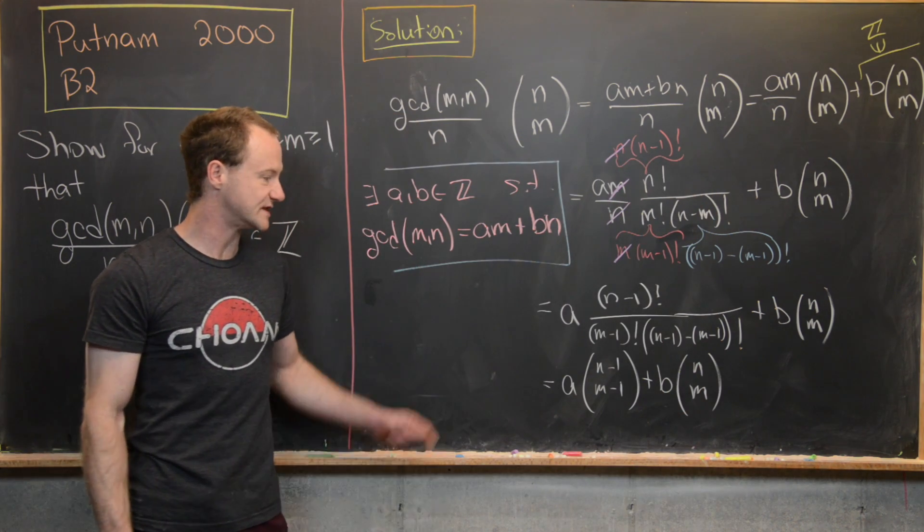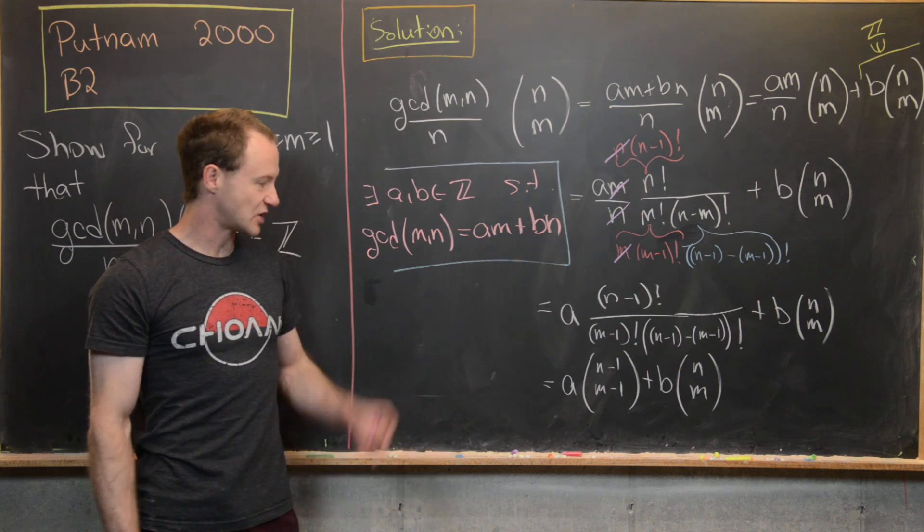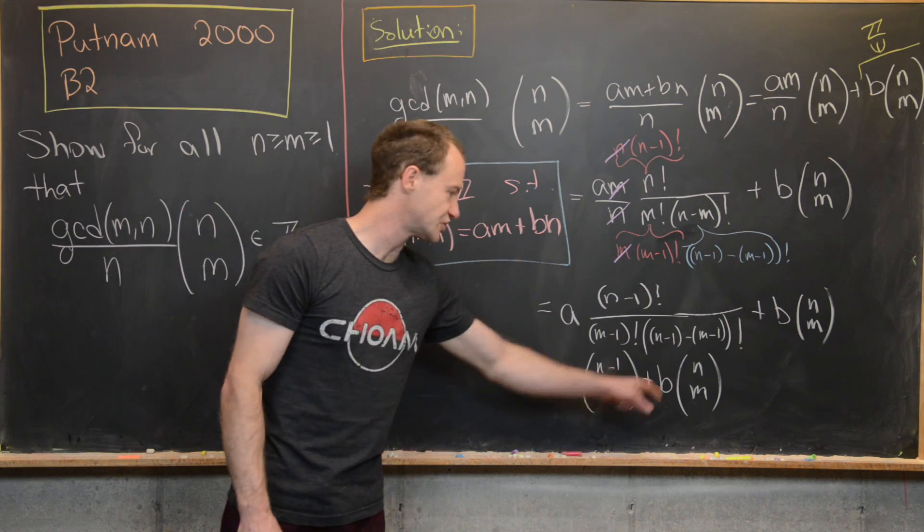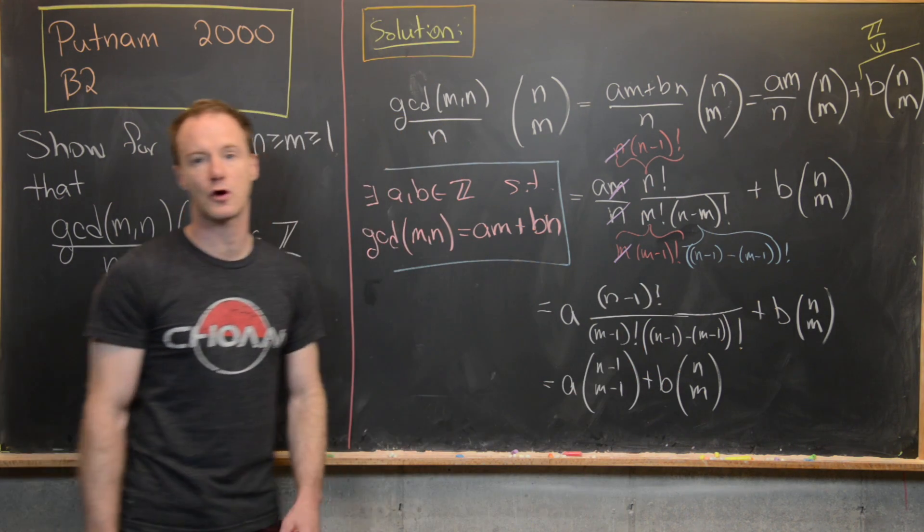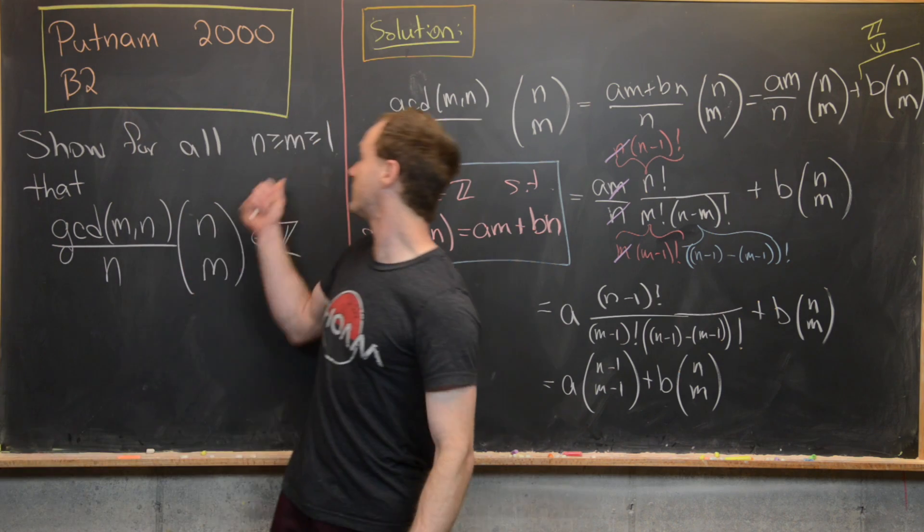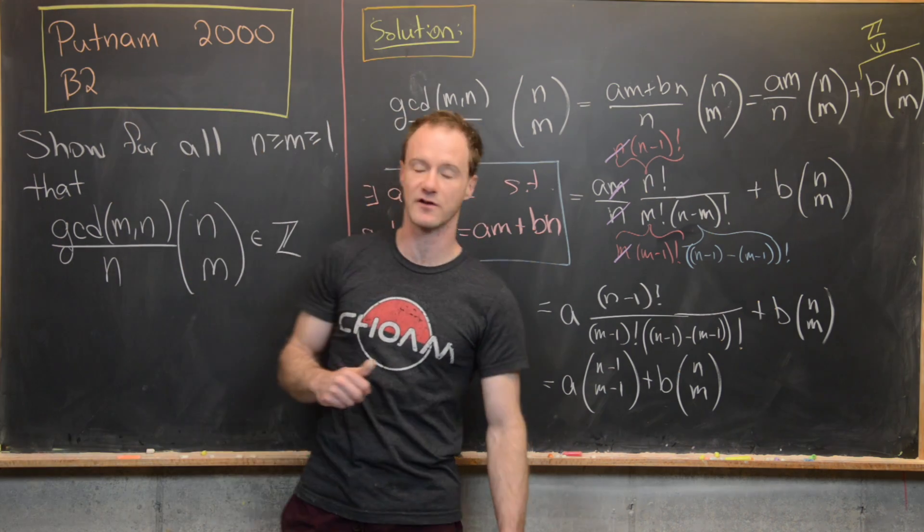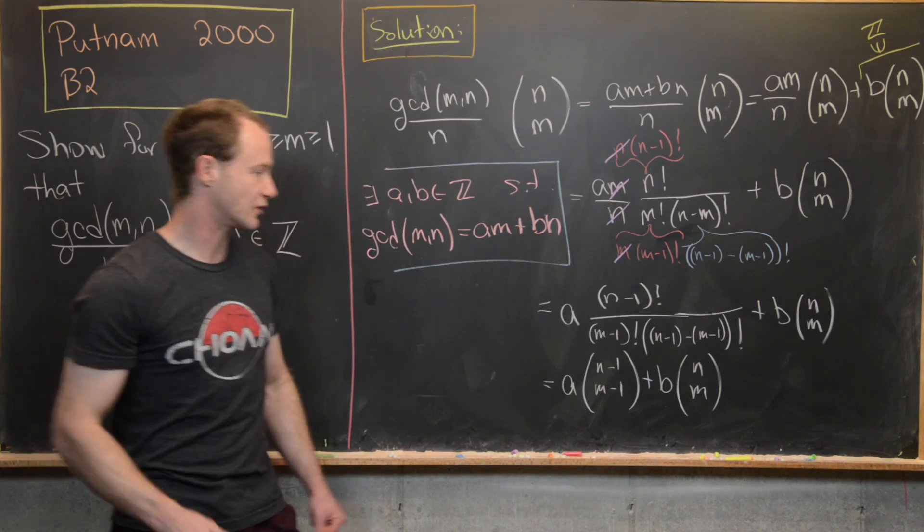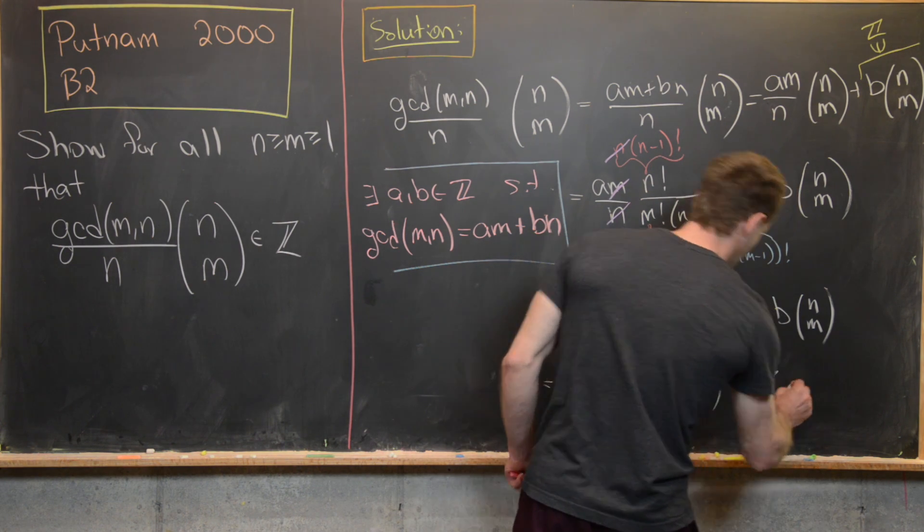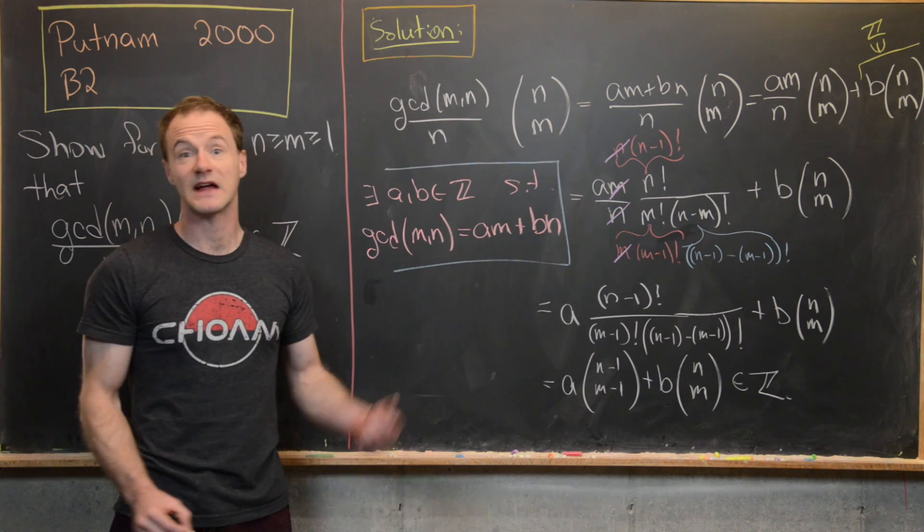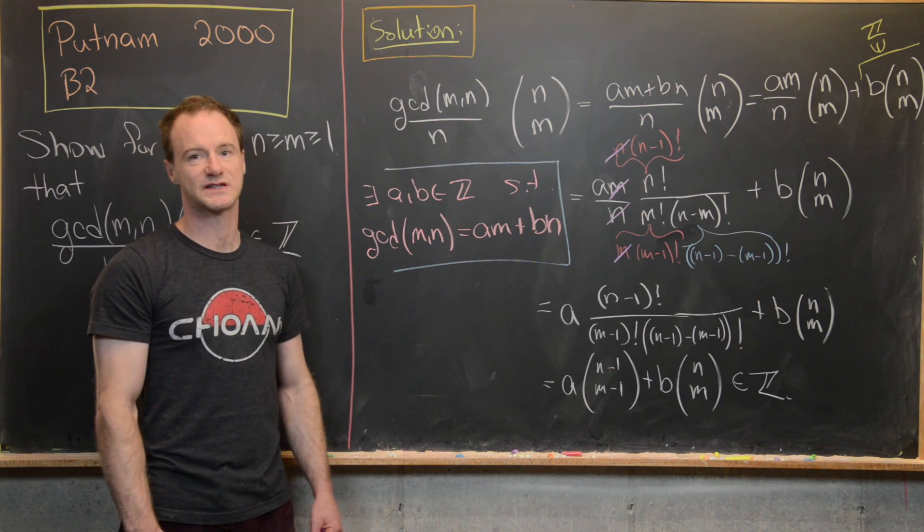But now all portions of this expression are integers. a was an integer. b was an integer. These binomial coefficients are integers. Given this setup here where n ≥ m ≥ 1. So that means this combination is an integer. And that's the end of the problem. And that's a good place to stop.